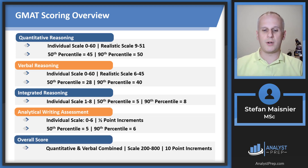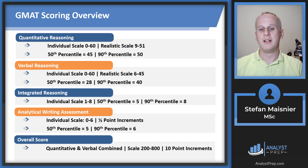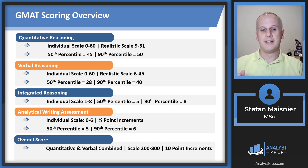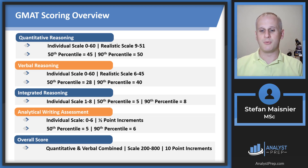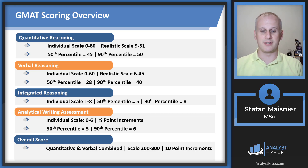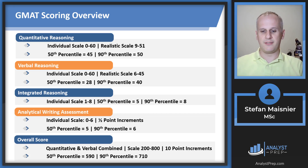Your overall score — only quantitative and verbal combined — goes into the 200 to 800 scale in 10-point increments. The AWA and integrated reasoning do not count toward that overall score. That said, don't completely ignore them — there have been instances, particularly at European and Asian schools, where students were asked to retake the exam for a better integrated reasoning score. The 50th percentile for the combined quant-verbal score is 590, and the 90th percentile is 710.